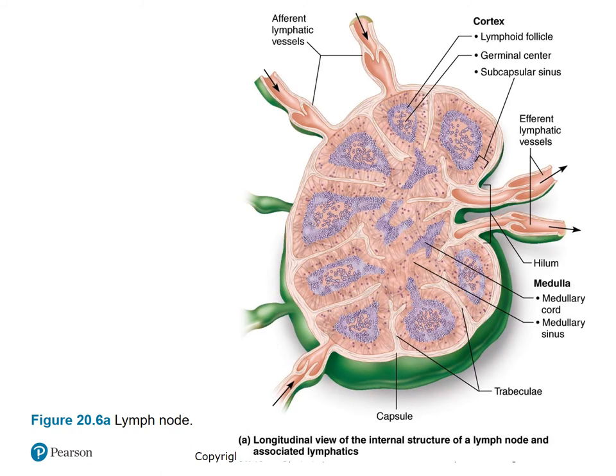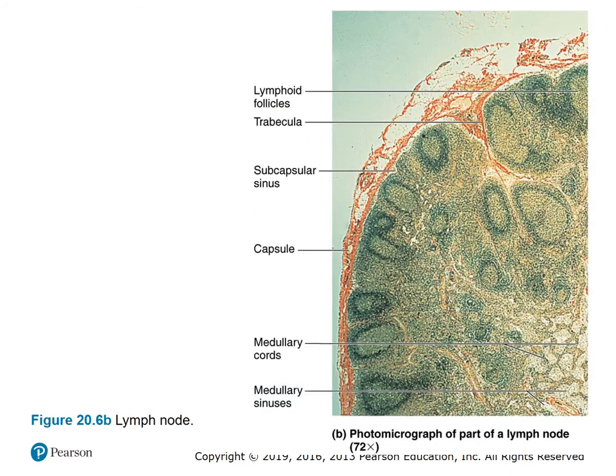Figure 20.6 shows a longitudinal view of the internal structure of a lymph node and associated lymphatics. Notice the cortex, which contains the lymphoid follicle germinal center and subcapsular sinus, and the medulla, which contains the medullary cord and medullary sinus. Notice the trabeculae, the capsule that surrounds it, and the afferent and efferent lymphatic vessels. Figure 20.6b is a photomicrograph of part of a lymph node showing the lymphoid follicles, trabeculae, subcapsular sinus, the capsule, medullary cords, and medullary sinuses.